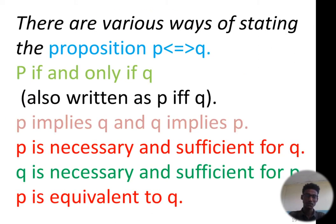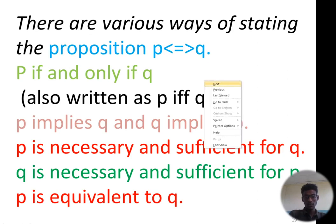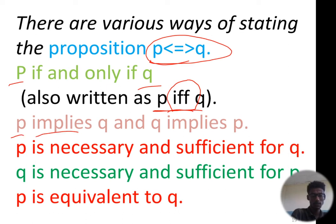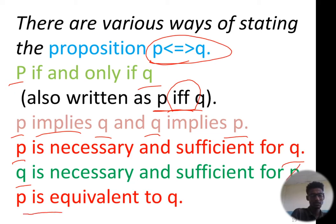There are various ways of stating the proposition P implies Q: P if and only if Q; also written as P IFF Q; P implies Q and Q implies P; P necessary and sufficient for Q; Q is necessary and sufficient for Q; P is equivalent to Q; P implies Q; P is equal to Q.